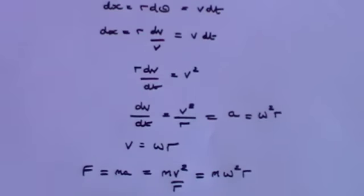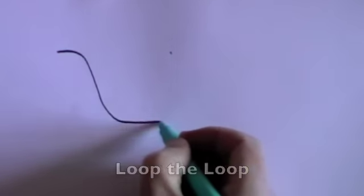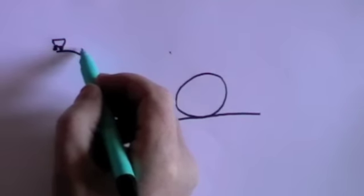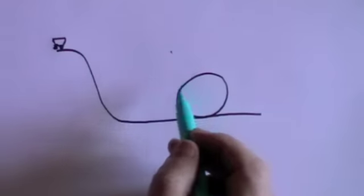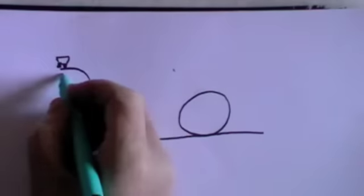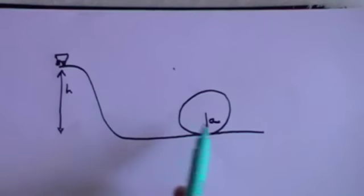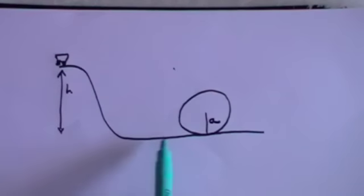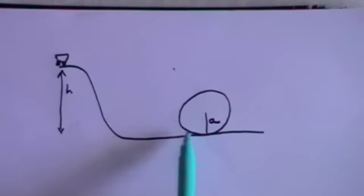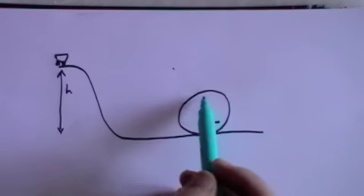Now let's apply what we've learned to exam-style questions. First, the fairground loop-the-loop. A car starts at height h above the ground with zero speed, falls down the incline, and goes round a loop of radius a. The question is: what is the relationship between h and a to ensure that when the car goes round the loop, it doesn't fall off? How do you design it so the car has enough speed to stay on the loop, even when passengers are upside down at the top?